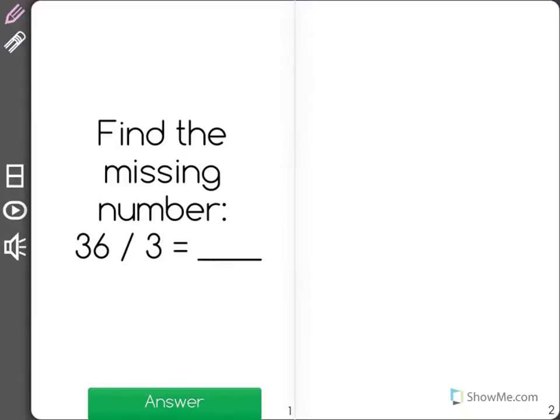Find the missing number, 36 slash 3. Now this slash is just another way to say divide. So 36 divided by 3 equals blank.